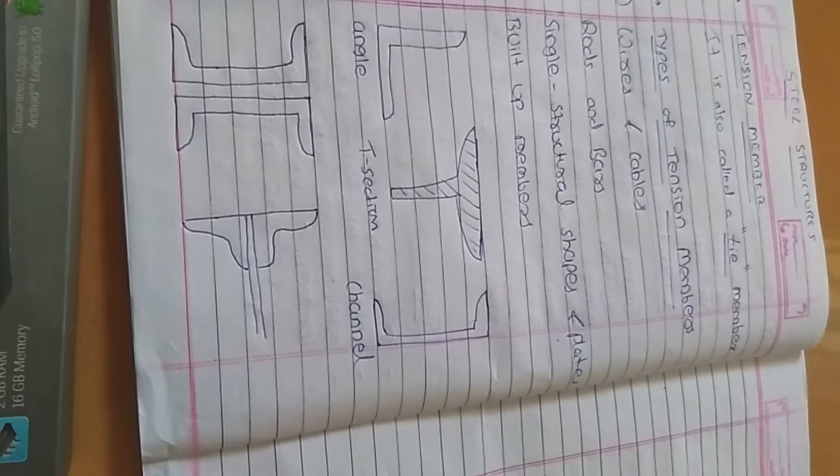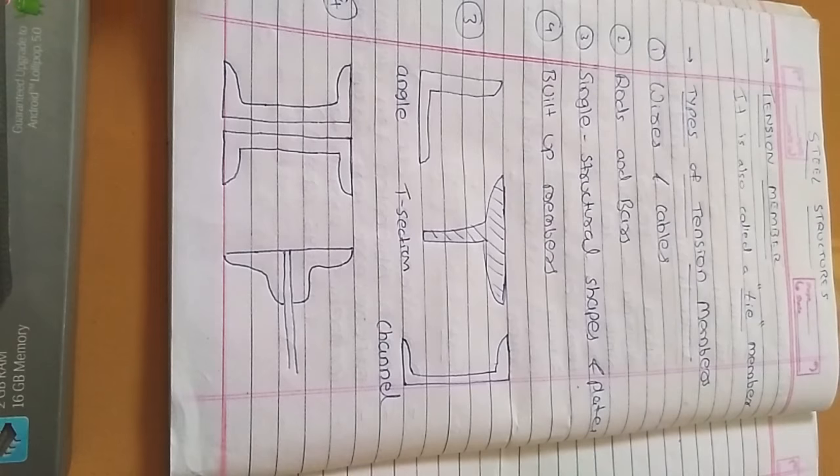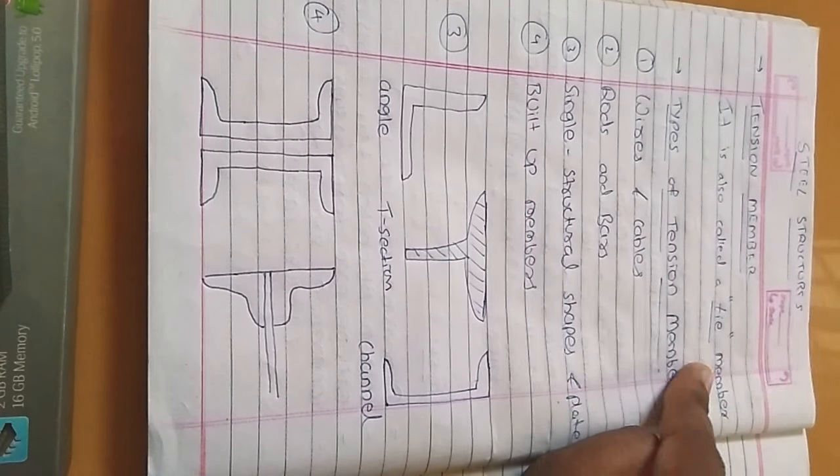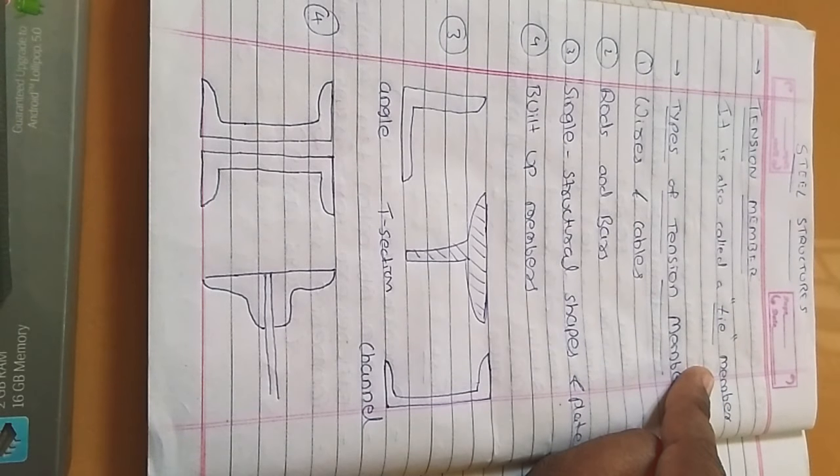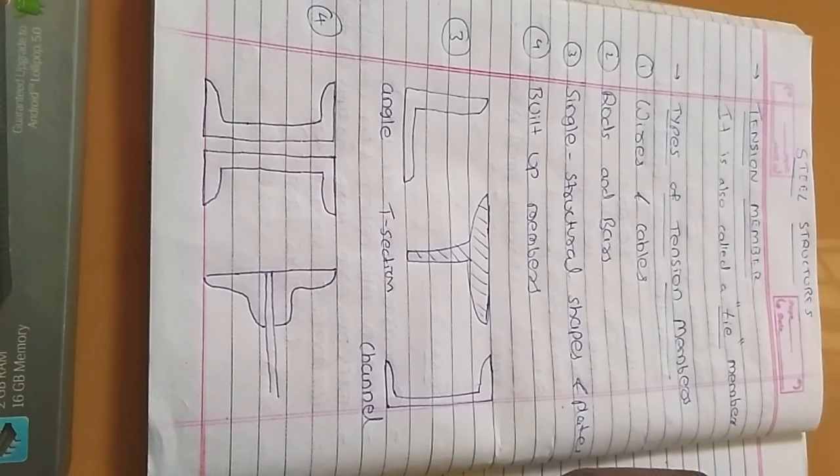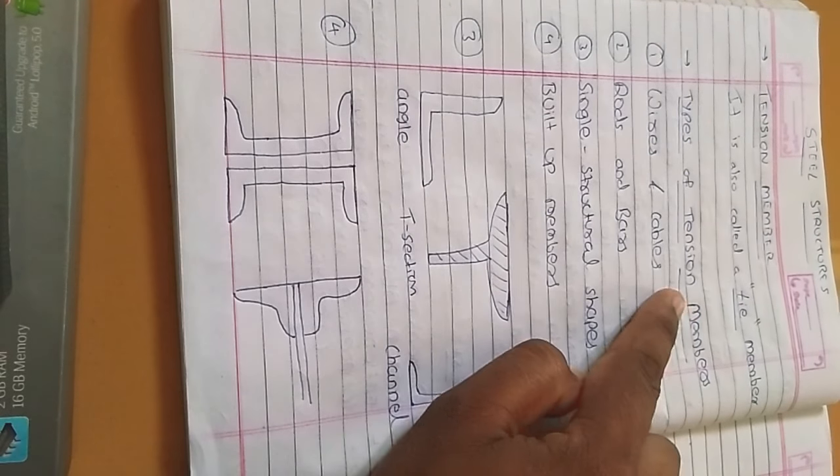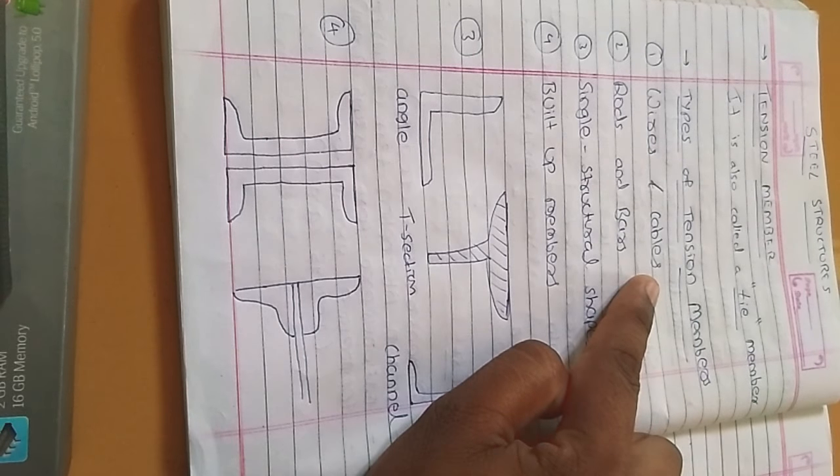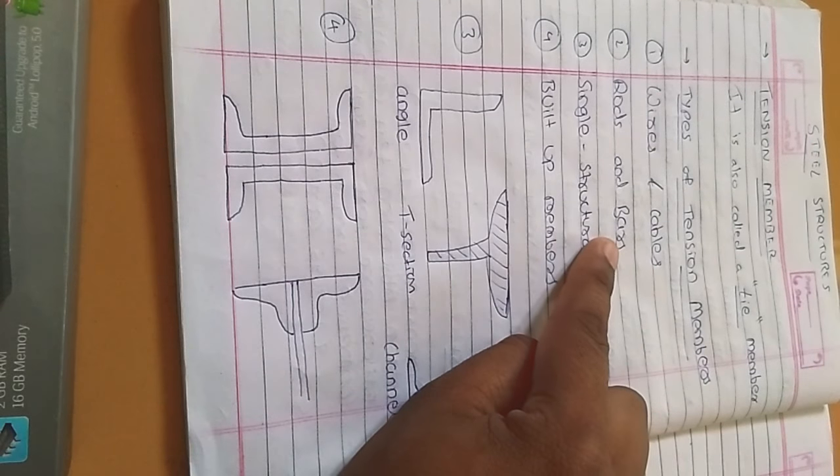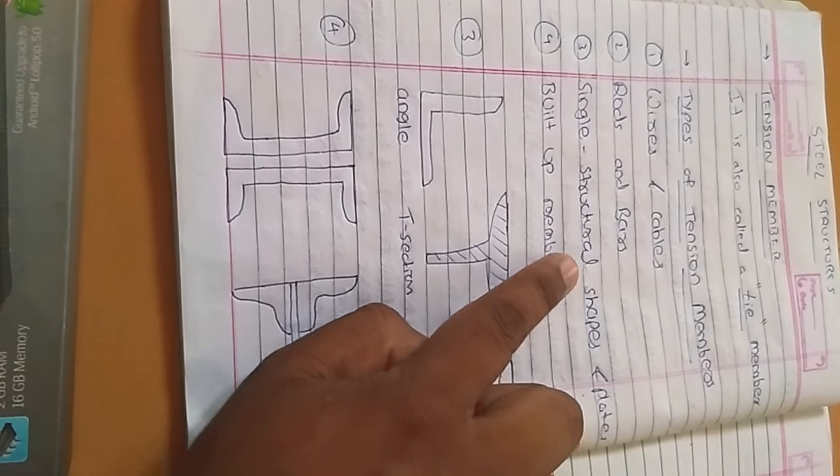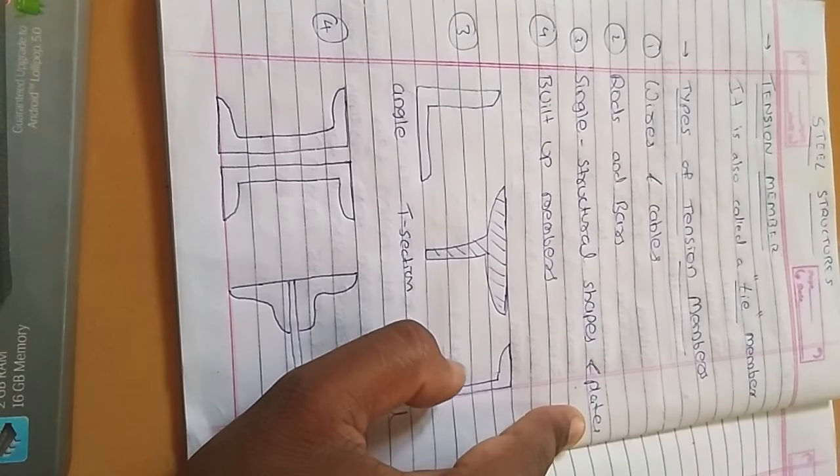Now steel structures. I have a little idea to give you. Tension member, which is also called tie members or you can say just a tie. Types of tension members: wires and cables, everyone knows what those are. Rods and bars - rod is just steel bar. Now single structural shapes and plates.